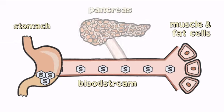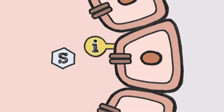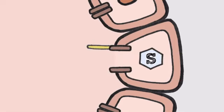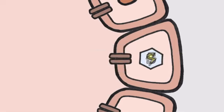However, sugar can't enter these cells without the help of a special hormone called insulin, which is produced by the pancreas. Insulin acts like a key, unlocking the doors to the muscle and fat cells, and allowing the sugar to enter. The cells then use this sugar as fuel to provide energy for the body.